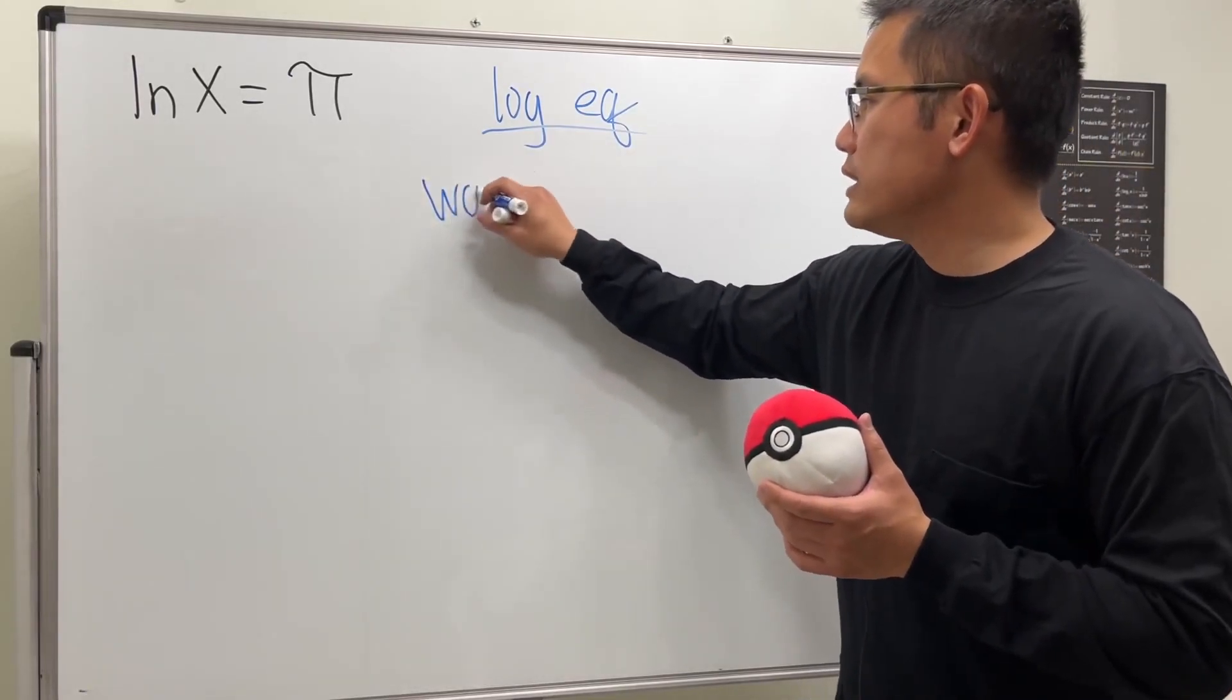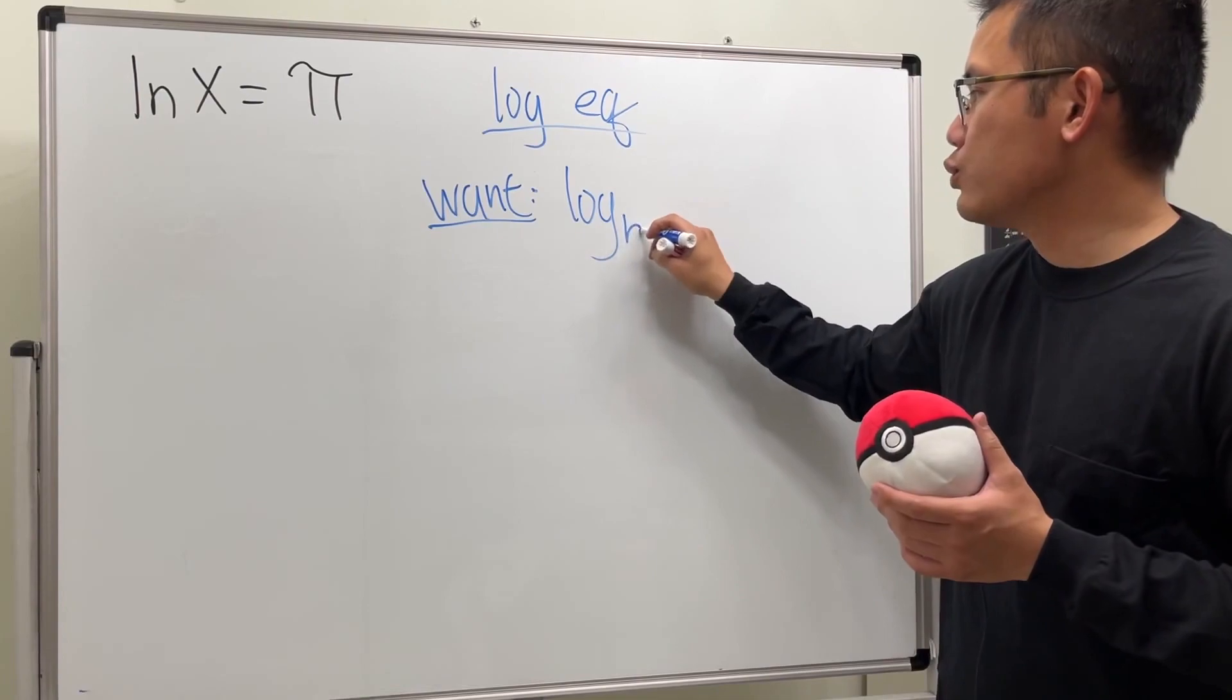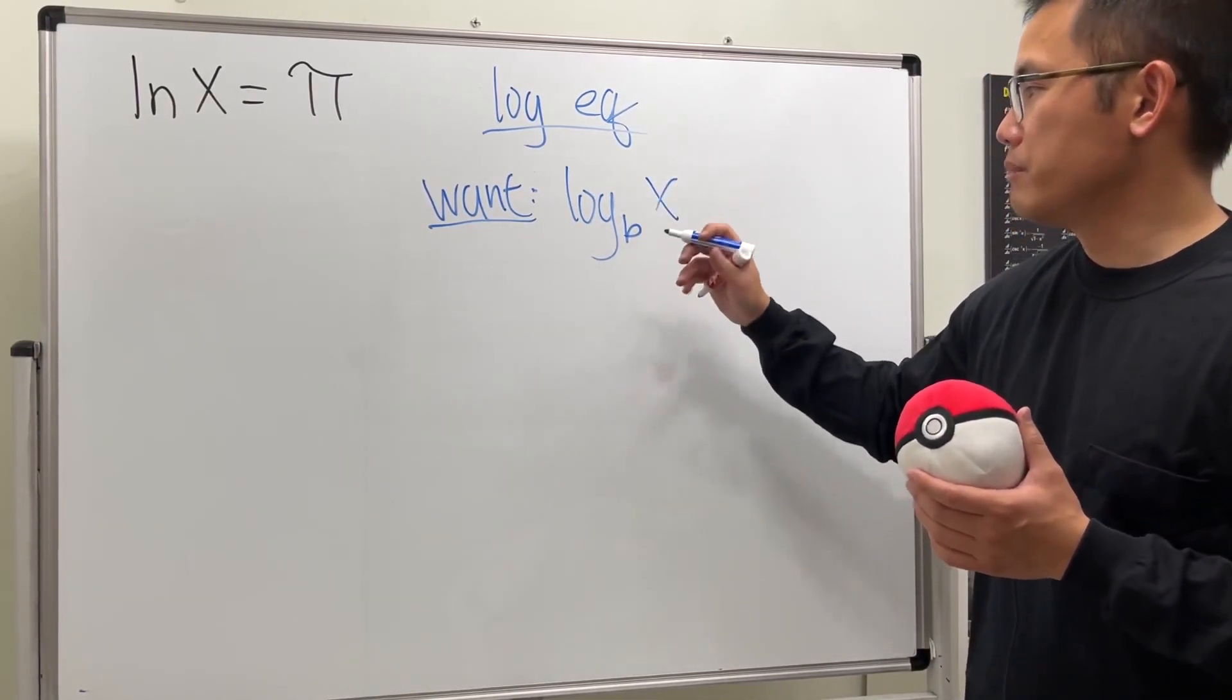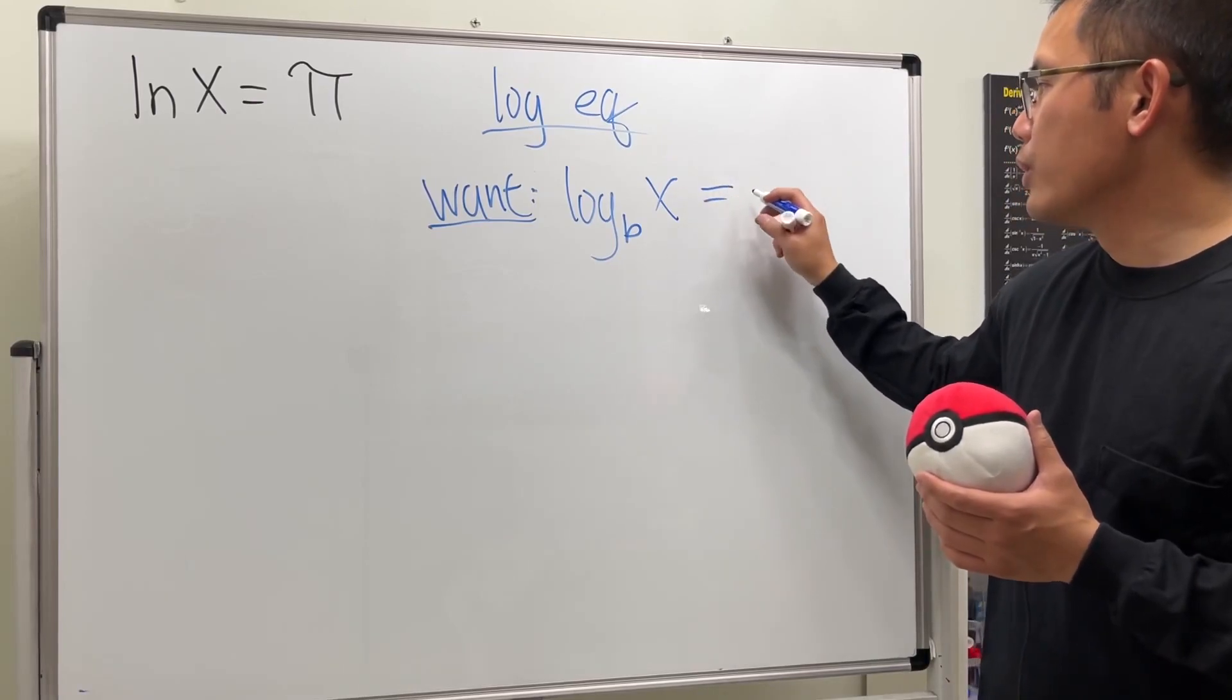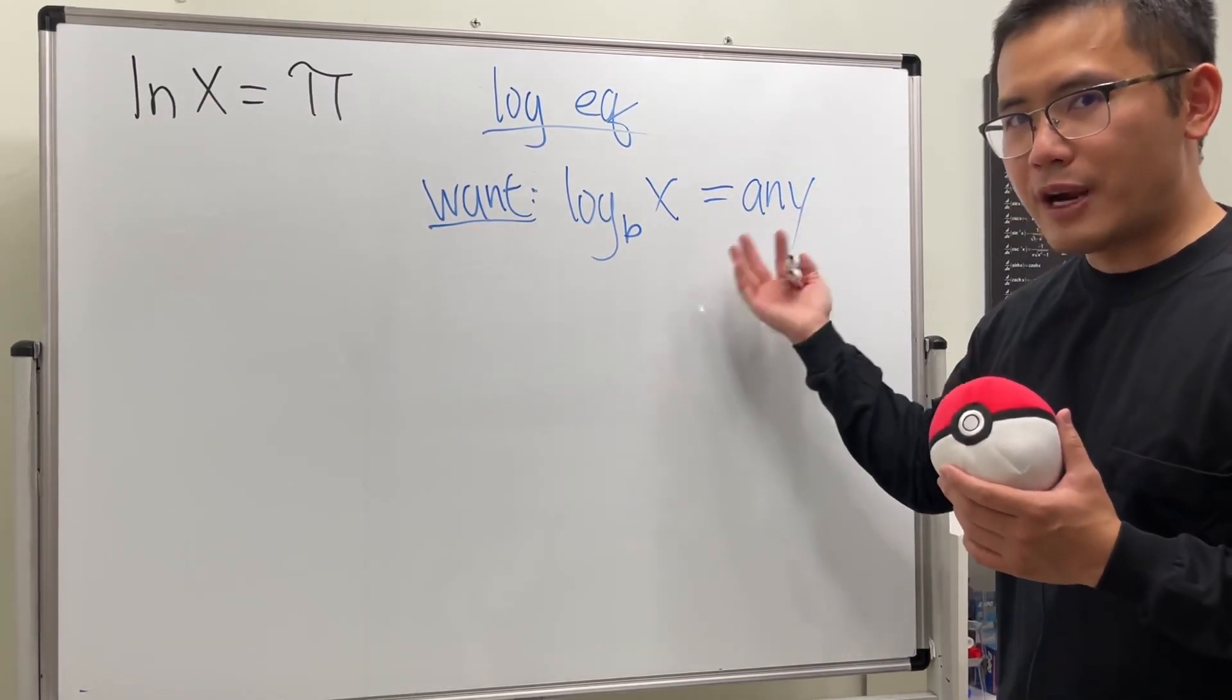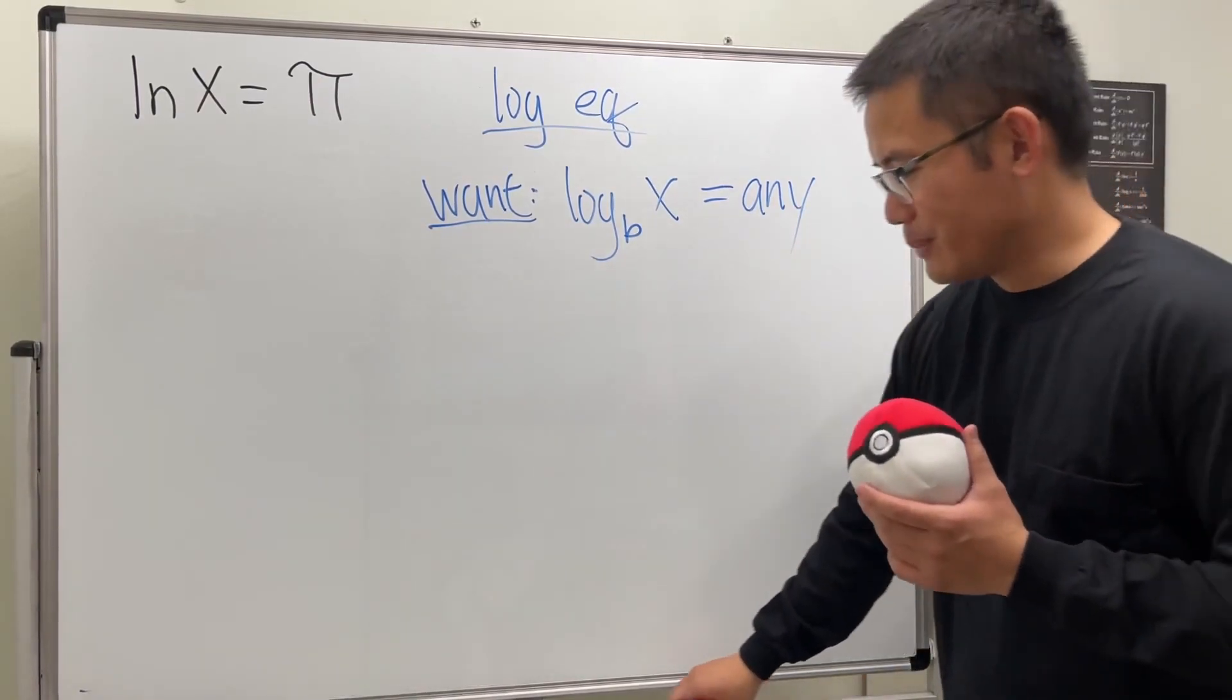First off, we want to see the following. We want to have log with whatever base right here being isolated. And let's say we have just x for the input inside. And then this is equal to any number. It can be positive, it can be fraction, it can be negative, it can be zero and all that. So we don't have too much worry about this.